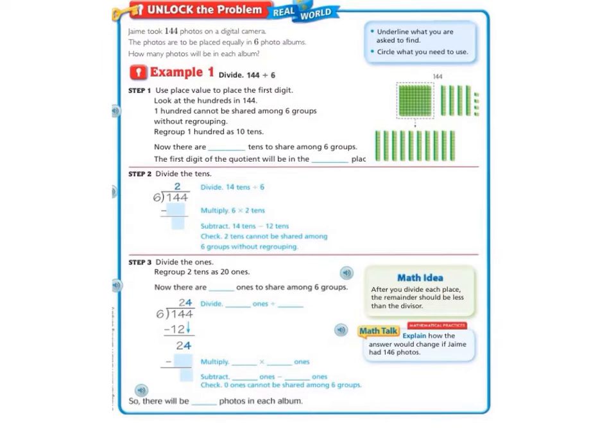Let's look at our blue box first to know what to do. It says we're going to underline what we are asked to find. Well, we want to find how many photos will be in each album. Circle what we need to use. We need to know there's 144 photos and we're going to split them equally into six groups. So we're going to divide 144 divided by six.